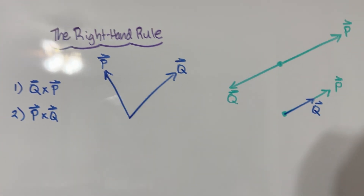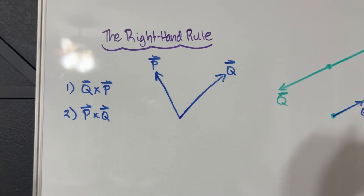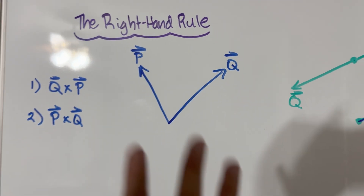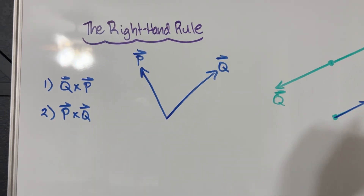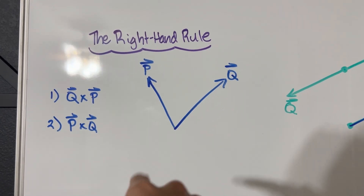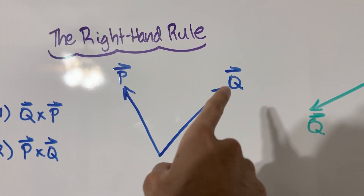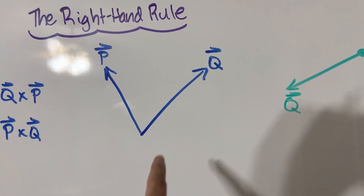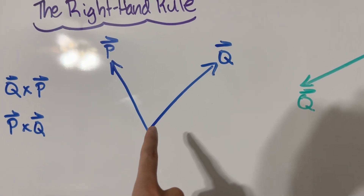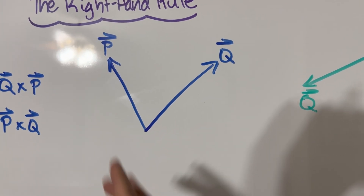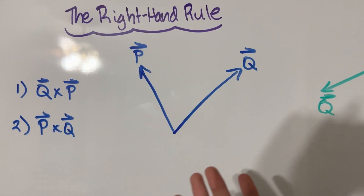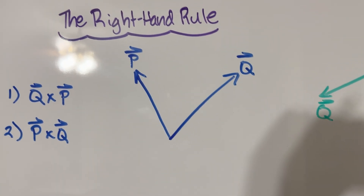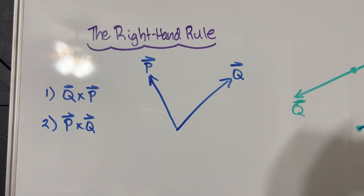Welcome back to a slightly different type of video. In this video, I want to explain the right-hand rule and how we calculate the direction of cross products. If we did P cross Q and Q cross P, we know that the resultant vector product would be in a direction that's in and out of the plane. We want to answer which direction — is it coming out of the whiteboard or going into the whiteboard?